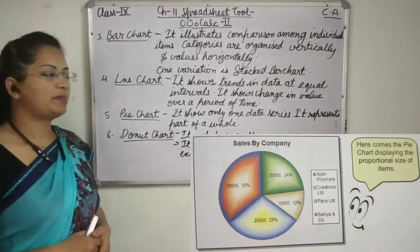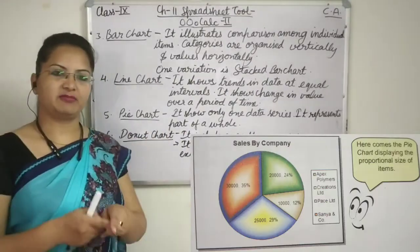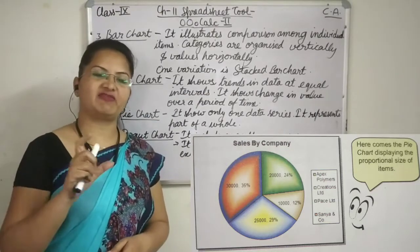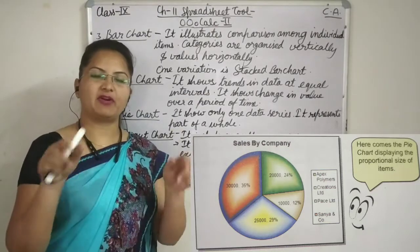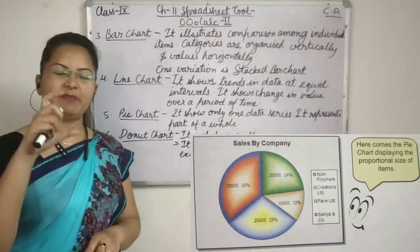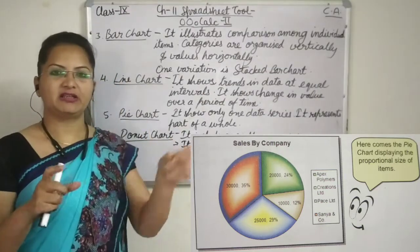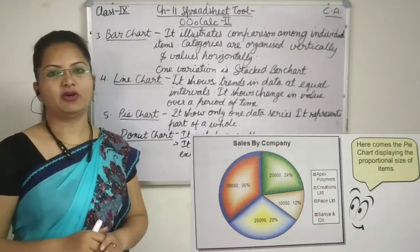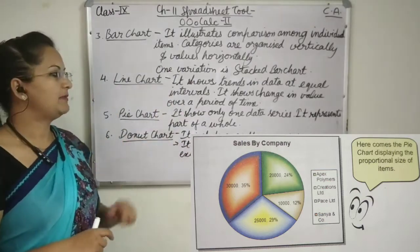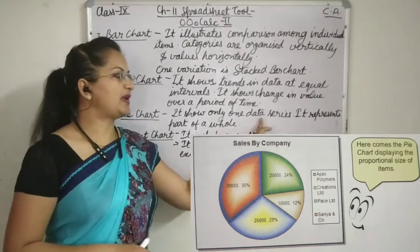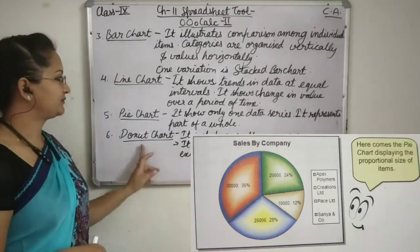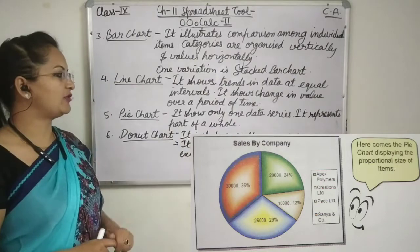Now pie chart. Pie chart means it will be in the shape of a pie — as we can cut a piece of pie from a whole pie. The same way here also every part will be the part of a whole. Every slice will be the part of a whole in the pie chart. It is used to compare only one data series and it represents the part of a whole.